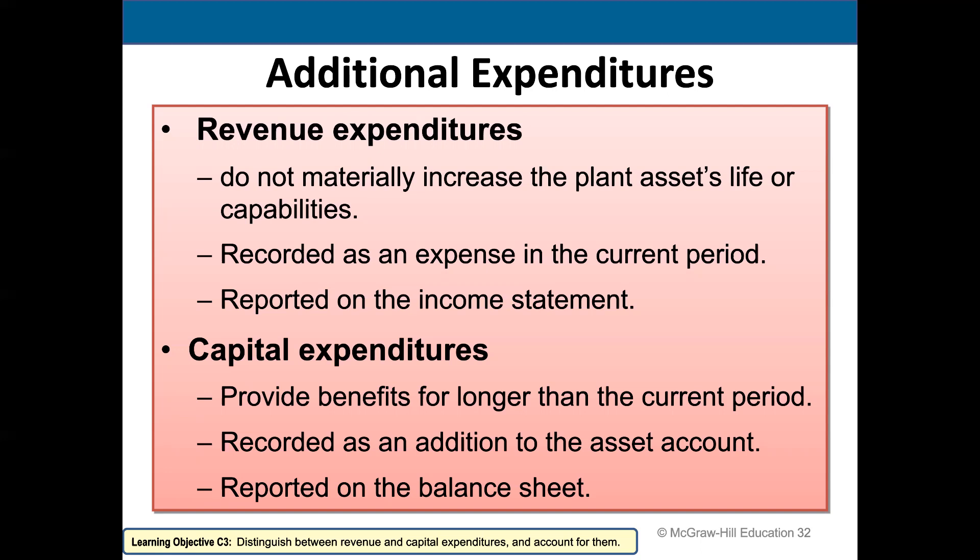Revenue expenditures do not increase the plant asset's life or capabilities. That doesn't include things like regular maintenance. You might argue that maintenance — like an oil change on a vehicle — extends the asset's life. But it doesn't really extend its life; it allows it to live a normal life, meaning it lasts as long as it should with regular maintenance. So revenue expenditures don't extend the asset's life. We record them as an expense during the period. If I paid for an oil change on a vehicle, I would record that as a maintenance expense on our income statement.